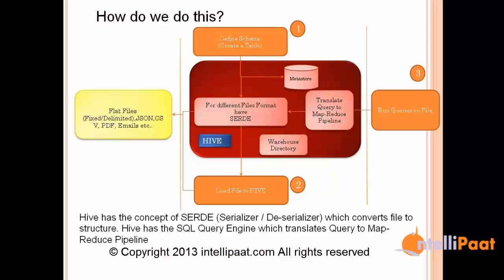What we need to understand is: what is fundamentally Hive? Hive tries to make any file in HDFS queryable — you can make virtually any file queryable. To do that, for every file you need to define a schema. Then there is the load command — take the file and load it into Hive. Then you can start querying. Internally, it translates down to a MapReduce pipeline and uses its Metastore, SerDes, and warehouse directory to make the whole thing work.